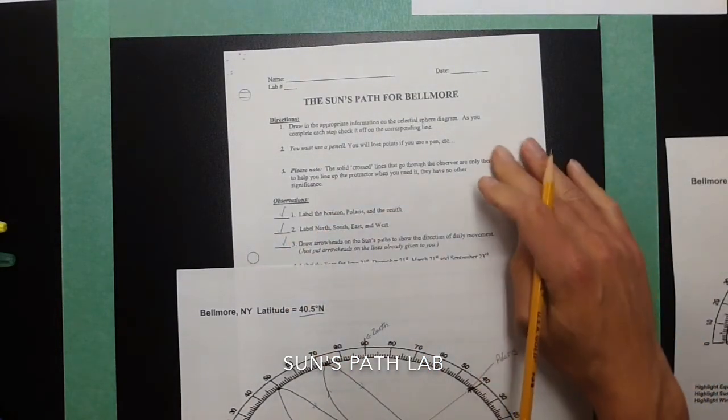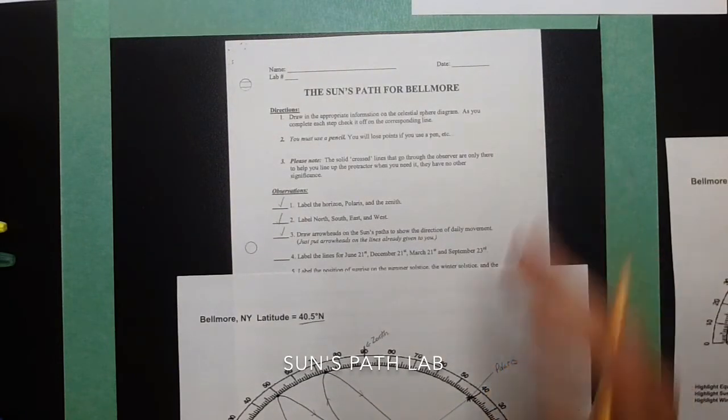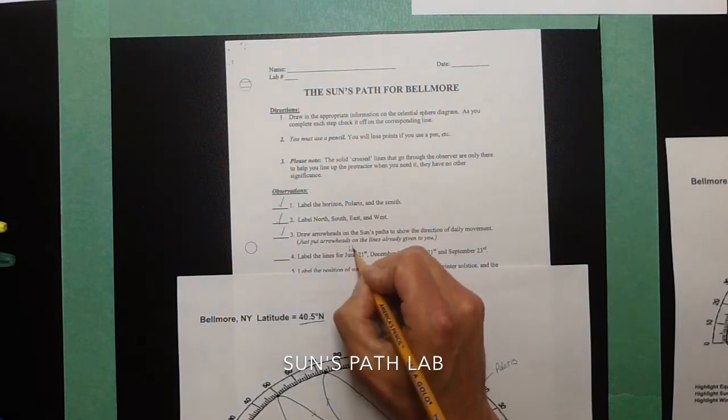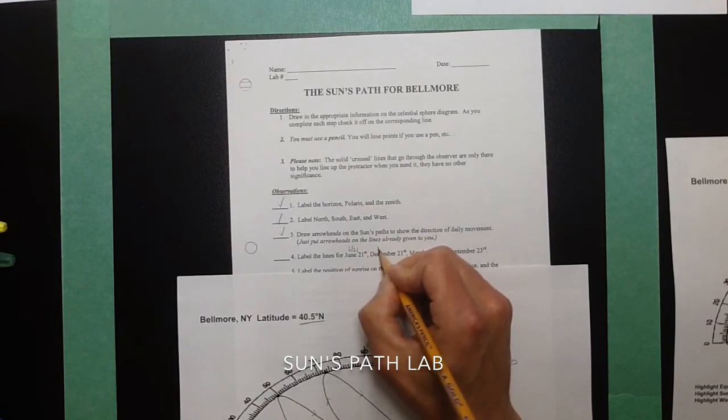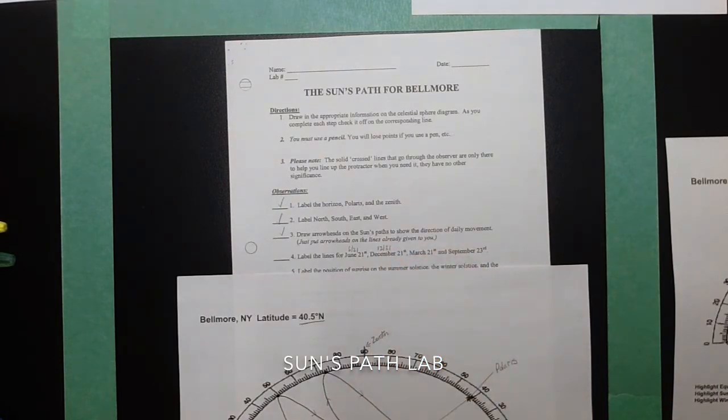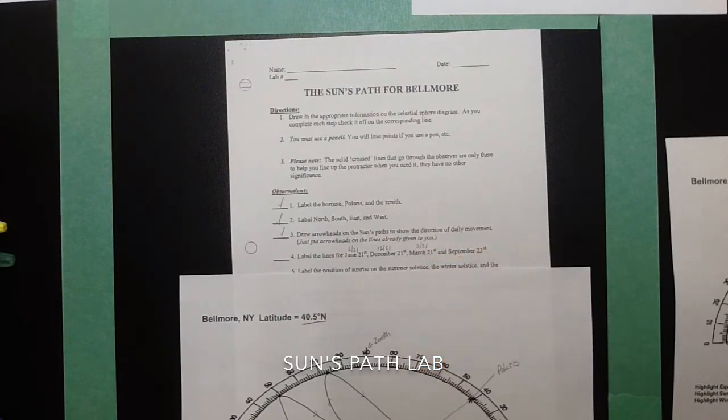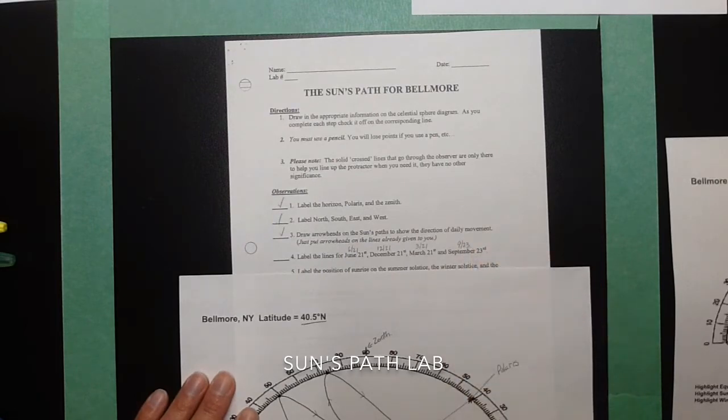Now, you should know that it's moving at 15 degrees per hour. Now, the dates that they're giving you. June 21st, you could write as 621. December 21st is 1221. March 21st, I would probably write as 321. And September 23rd is 923. Those are the seasonal dates.